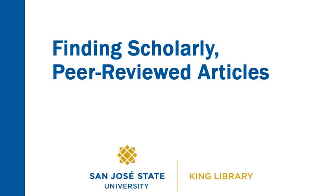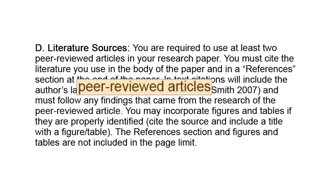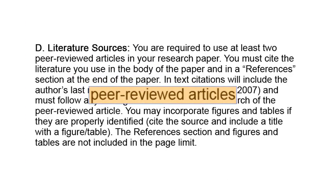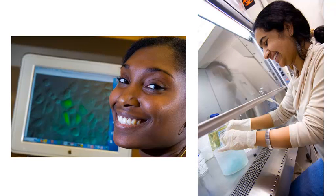Finding scholarly peer-reviewed articles. You need to find two scholarly peer-reviewed articles, but what are they? Where are they? Peer-reviewed articles are written by experts and reviewed by other experts — their peers — before they are published.